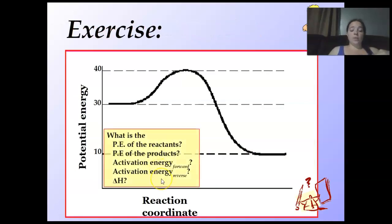What is the PE of the reactants? What's the PE of the products? Activation energy of the forward, activation energy of the reverse, delta H. PE of the reactants, here's my reactants, it is 30 kilojoules. Here's my products, it is 10 kilojoules. What is my activation energy of the forward? Up here, 40 minus 30, there's 10. What is my activation energy of the reverse? 40 minus 10 is 30.